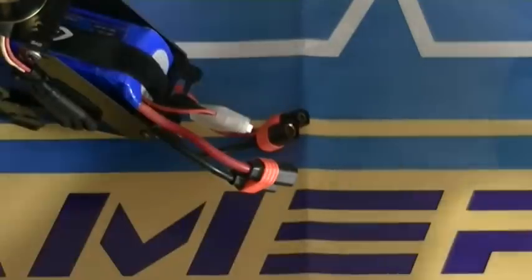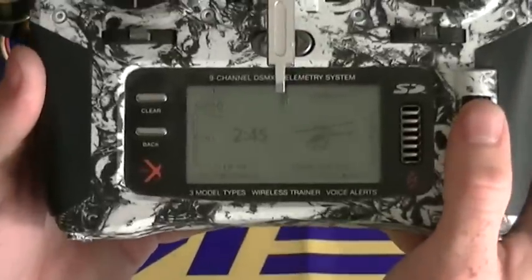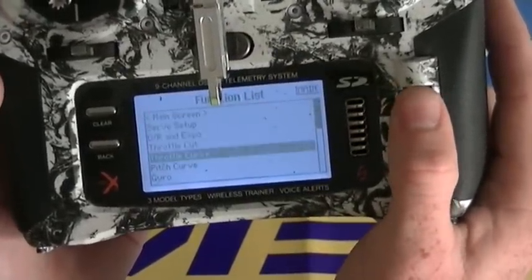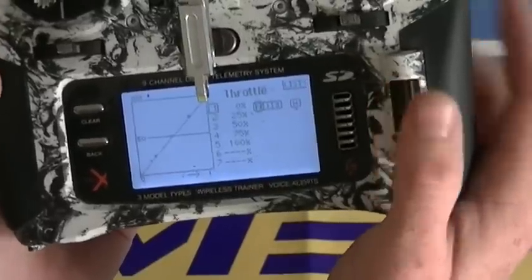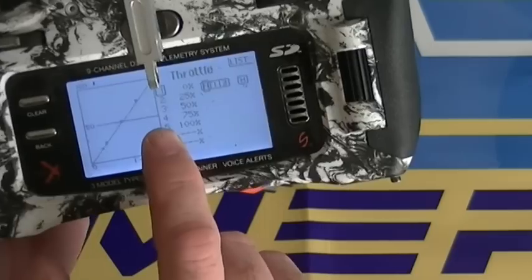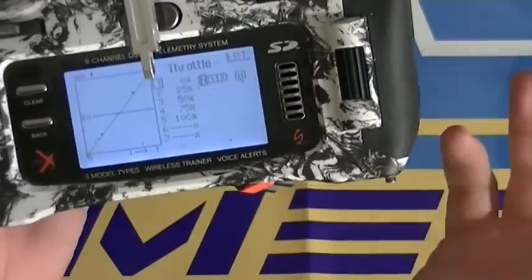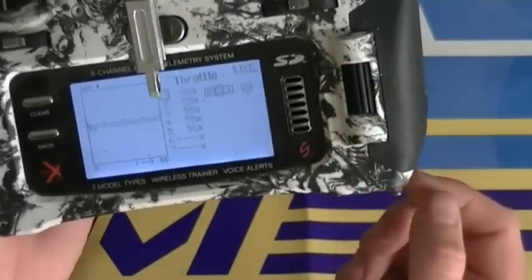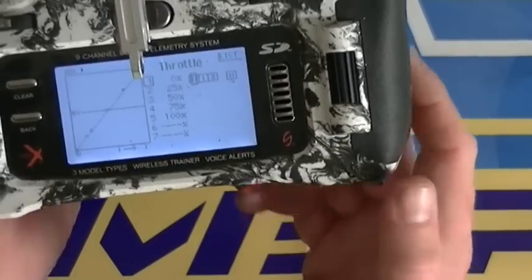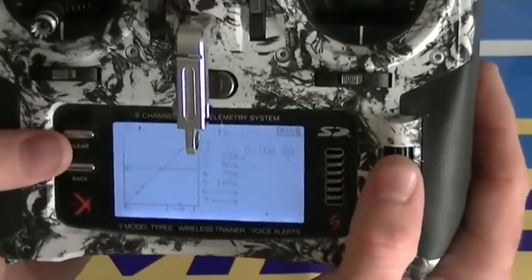Now what we're going to do is on the transmitter, we're going to go into our throttle curves setting. In normal mode, it's at a linear curve. Now we're going to set a flat 50 throttle curve. So you will set normal at 50 percent, or your flight mode depending on what your radio is calling it, set it at a flat 50 percent.